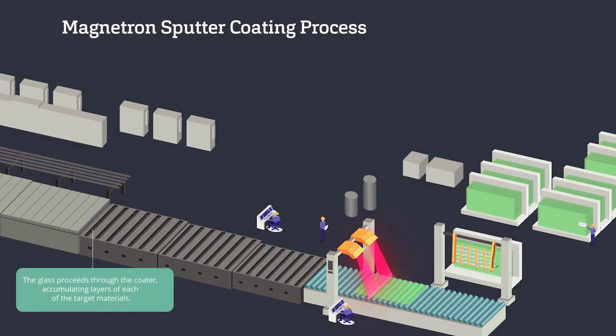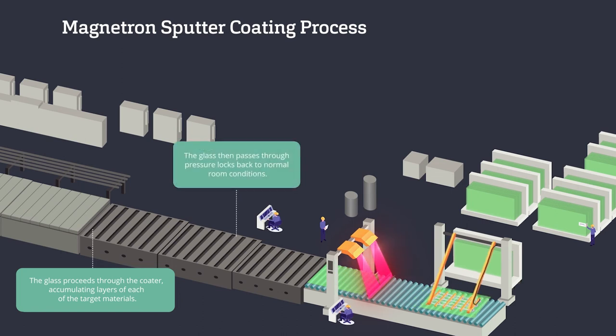The glass proceeds through the coater accumulating layers of each of the target materials and then passes through pressure locks back to normal room conditions.